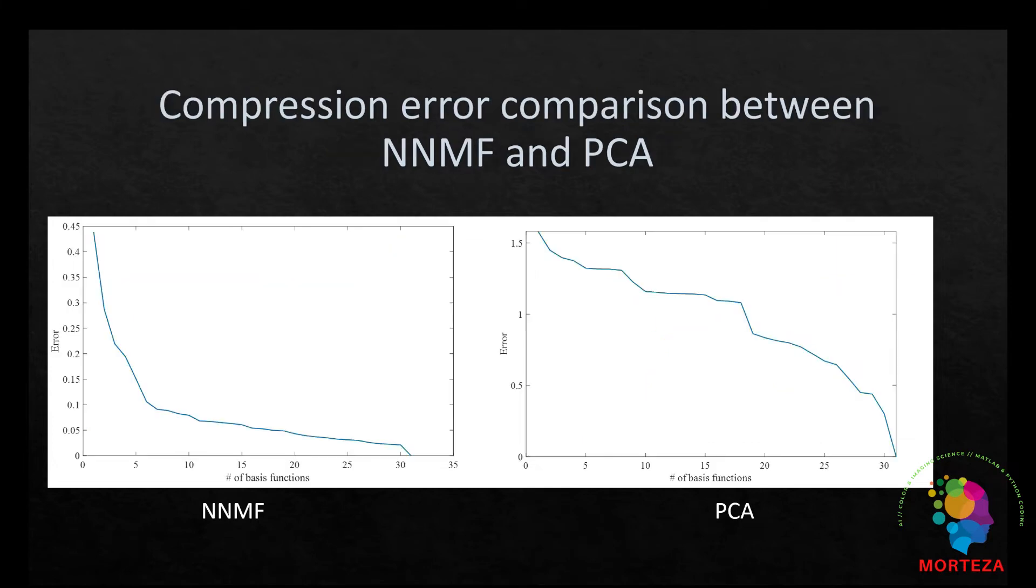We now want to see what happens when we use the basis functions extracted using NNMF and PCA to compress and reconstruct the data we have. In other words, we want to see which one leads to a lower error of reconstruction. First it should be noted that the error naturally should go down by adding more basis functions to compress the data. The dimension of our data is 31 by 1269, which are the spectral reflectance data of 1269 samples of Munsell data set.